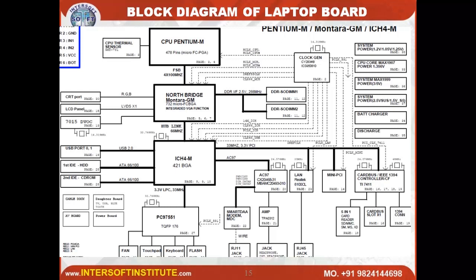You can see mainly there are: CPU, northbridge, southbridge, I/O IC, clock generator ICs, audio IC, and LAN ICs. Audio, LAN, clock generator, I/O, southbridge, northbridge, and CPU ICs are there. There is also a power supply IC, CRT/LCD connections. These are the main ICs in a laptop schematic.